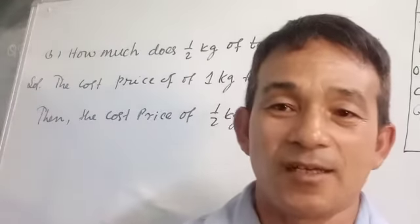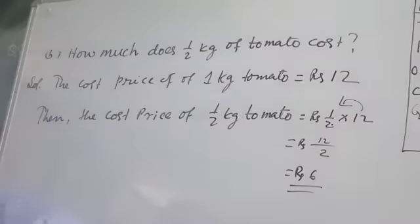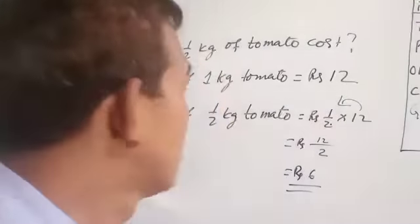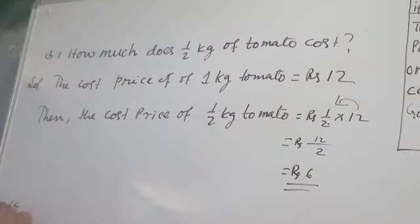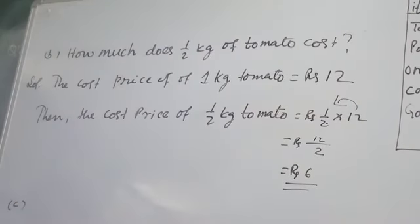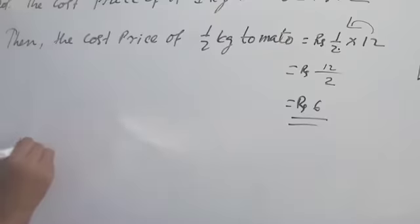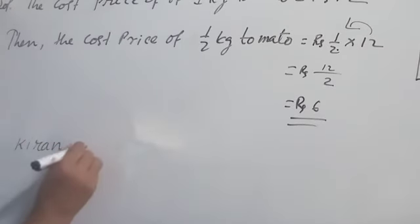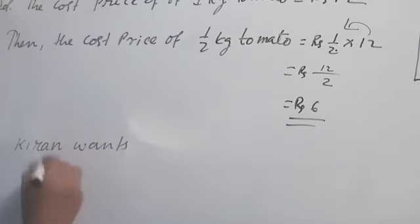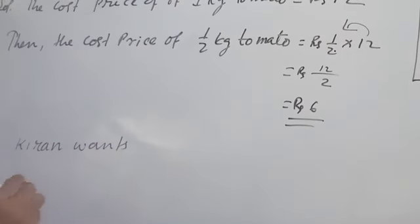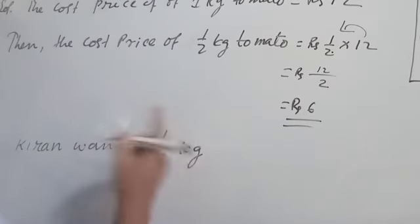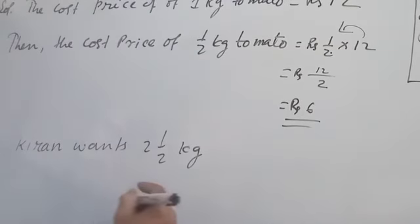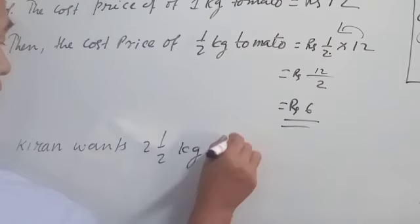Now question number C: Kiran wants 2 and 1/2 kg of tomato. 2 and 1/2 kg means 2 and 1 half kg of tomato.